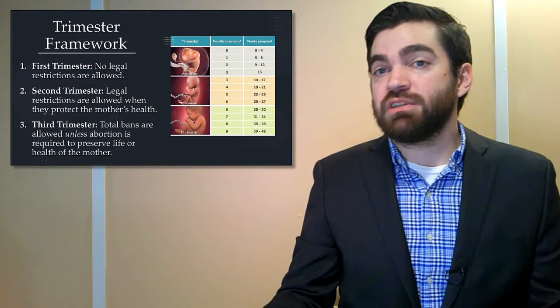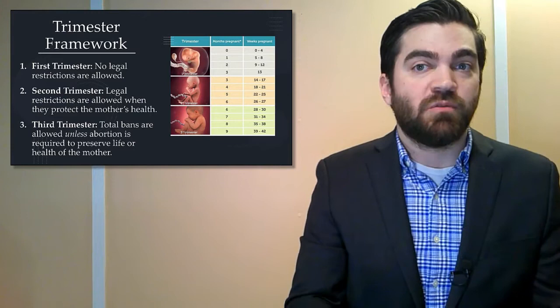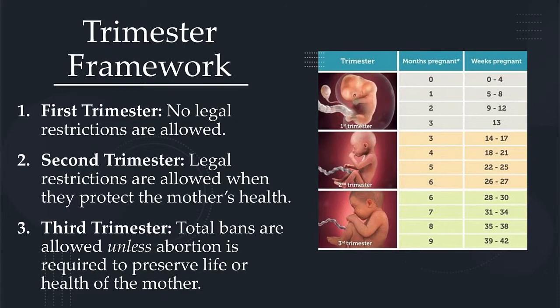Critics will say that because health was defined so broadly, the state has no power to step in and stop abortions from occurring even during the third trimester. Critics will say then that Roe v. Wade really gave the state no power to stop abortion at any time during pregnancy — that Roe v. Wade led to abortion on demand, allowing abortion to be performed at any time during pregnancy for any reason.